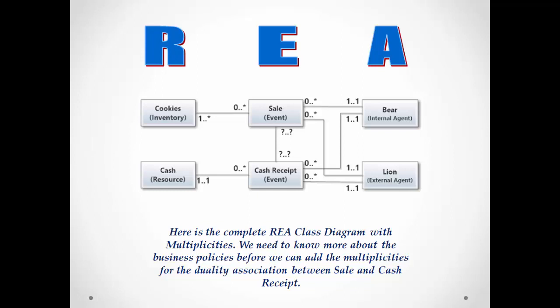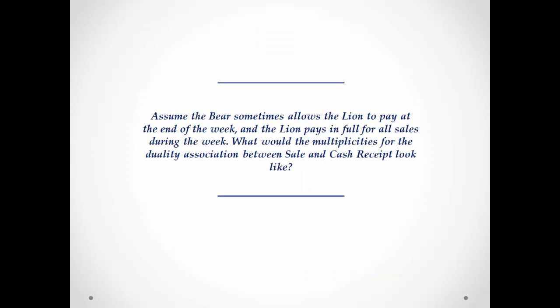We know all of the multiplicities based on the example, except those in the middle between the sale and cash receipt event — and those depend on the business policies. Here's a question for you: assume the bear sometimes allows the lion to pay at the end of the week, and the lion pays in full for all sales during the week when making that payment. What would the multiplicities for the duality association between sale and cash receipt look like in that case?